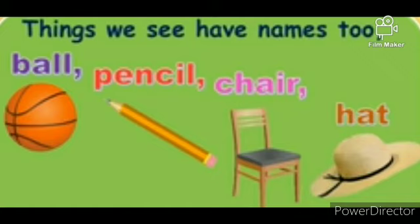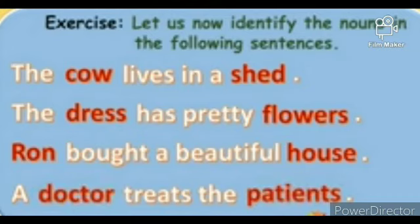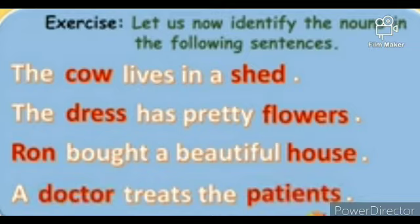Things we see have names too like ball, pencil, chair, hat etc. Now we will do some exercise on nouns. We have to identify the nouns. The cow lives in a shed — in this, cow and shed are nouns. The dress has pretty flowers — in this, dress and flowers are nouns. Ron brought a beautiful house — in this, Ron and house are nouns. A doctor treats the patient — in this, doctor and patient both are nouns.